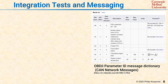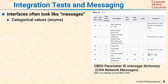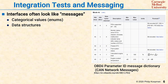In addition to sequence diagrams, it is common for high-level designs to also have some sort of interface description. Many interfaces look like messages one way or another. Here's an example of the OBD2 parameter ID message dictionary, which makes automotive operational parameters available via diagnostic port. This is a typical sort of message dictionary in that each message — which might be an actual network message or a data structure in memory — has a descriptor with a categorical value saying what kind of message it is: engine speed, engine coolant temperature, accelerator pedal position, and so on. Once you know what the enum, what the categorical value is, you can then interpret the associated data in a data structure or fields in a network packet based on what that identifier is.